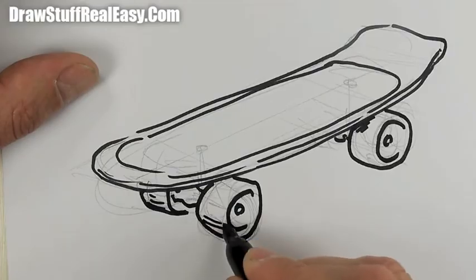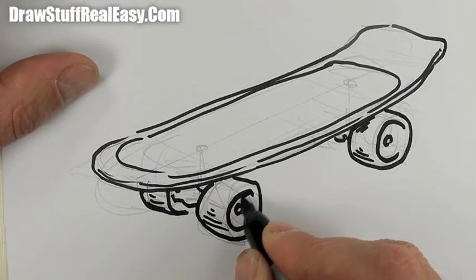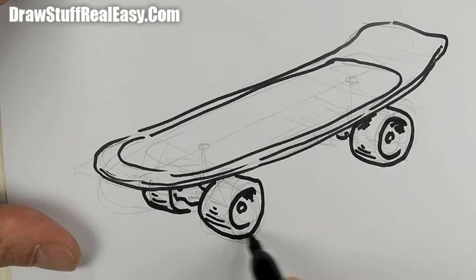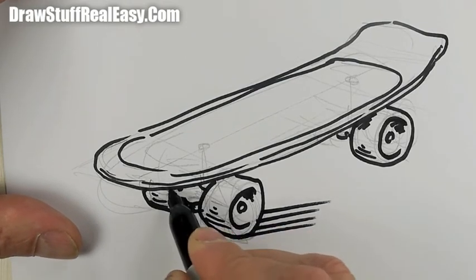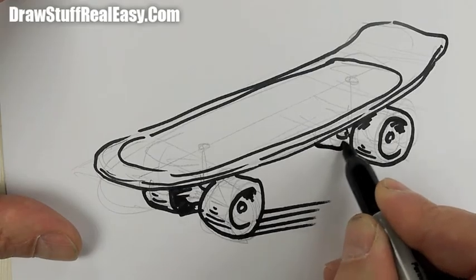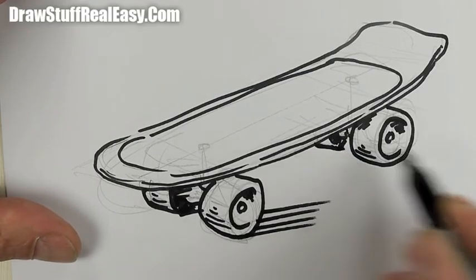You want a bit of shading like that just to give it a bit of depth, and then a bit of shading underneath there as well. Oh, we haven't got the other wheel in there like that. Good.